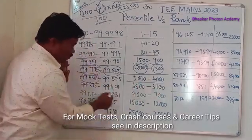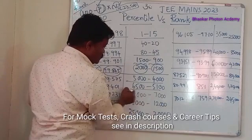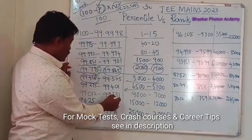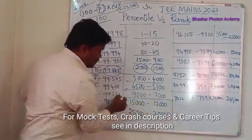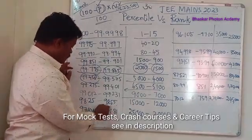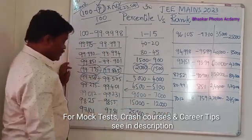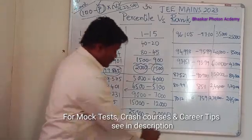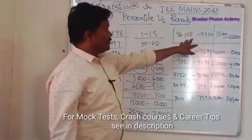For the percentile range 99.401 to 99.275, ranks were around 5000 to 6500. For percentile 99.23 to 99.0, ranks were around 7000 to 9000. For 98.55 to 98.25, ranks were around 12,000 to 15,000. And for 97.81 to 97.1, ranks were around 20,000 to 25,000.